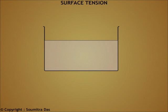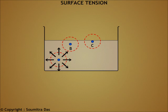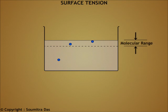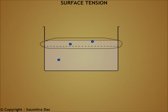Now let us look at this diagram. There is some liquid in a container. Consider three molecules A, B, and C, and draw the sphere of influence around each of them. For molecule A, the cohesive force acts from all sides and the resultant cohesive force is nil. For molecule B, part of the sphere of influence is outside the liquid surface, so molecule B has a resultant cohesive force acting downwards. Molecule C is on the free surface and half of the sphere of influence lies outside the liquid, so the resultant cohesive force acts downwards and is maximum. If we draw a line below the surface at a distance equal to the molecular range, all molecules in this region have a net downward cohesive force, and this portion is called the surface film.